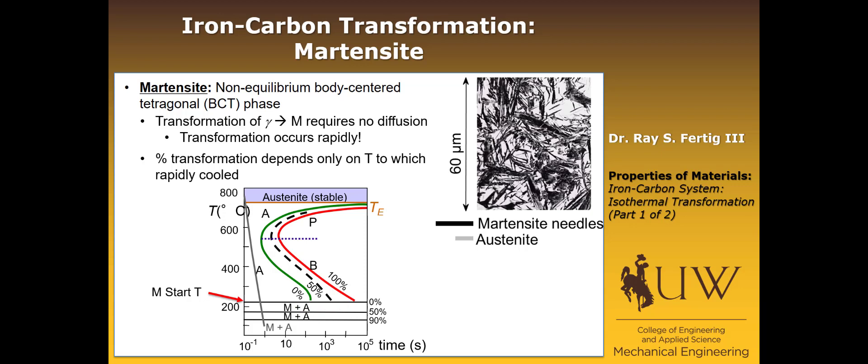Martensite is the hardest and strongest of all the steel microstructures, but it's also the most brittle. Those are the three microstructures you can expect to see in a time-temperature transformation diagram: pearlite, bainite, and martensite. If martensite forms but doesn't complete, then you'll also have some austenite remaining.